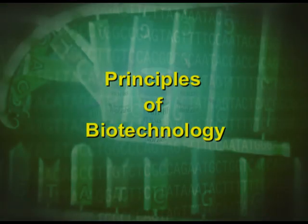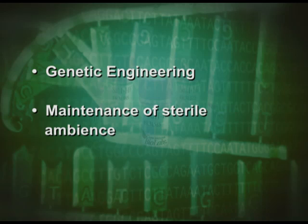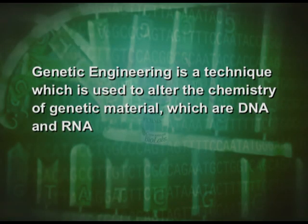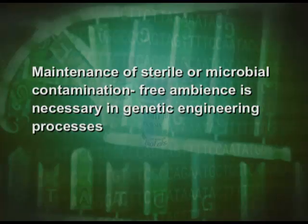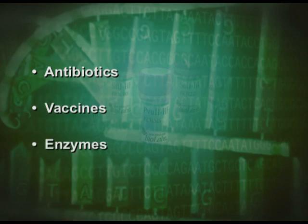Now let us discuss about the principles of biotechnology. Among the many techniques of biotechnology, the two core techniques that enabled the birth of modern biotechnology are genetic engineering and maintenance of sterile ambience. Genetic engineering is a technique used to alter the chemistry of genetic material, which are DNA and RNA, to introduce these materials into the host organisms in order to change the phenotype of the host organism. Maintenance of sterile or microbial contamination-free ambience is necessary in genetic engineering processes, because it enables growth of only the desired microbe or eukaryotic cell in large quantities for the manufacture of biotechnological products like antibiotics, vaccines, enzymes, etcetera.